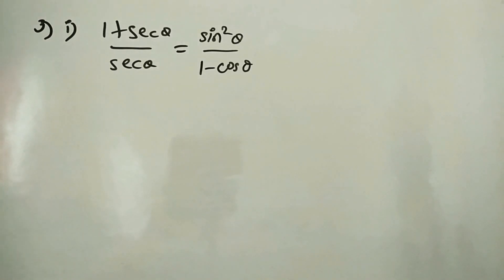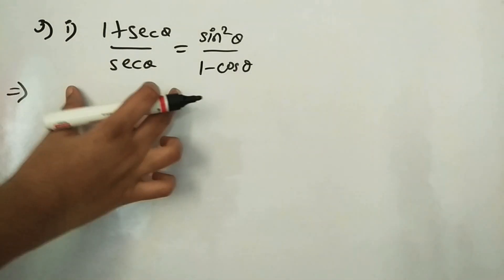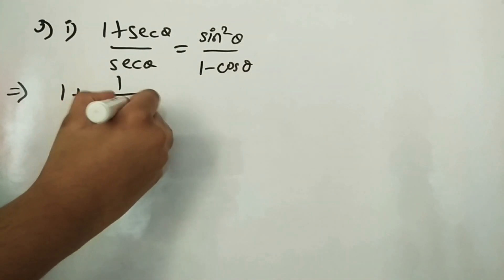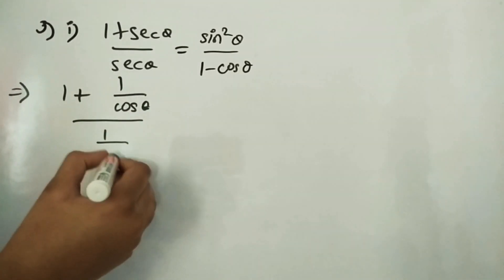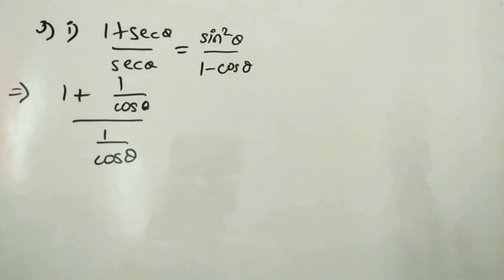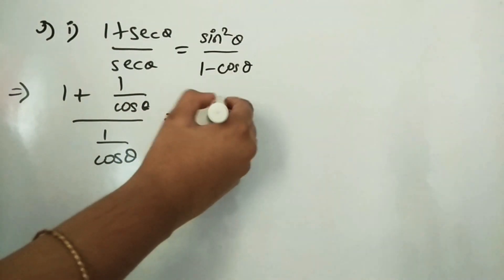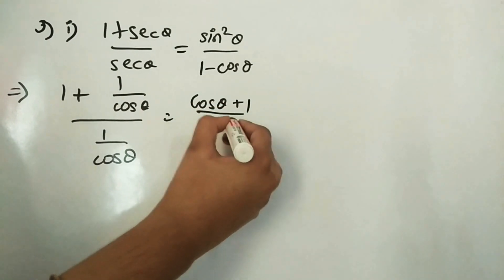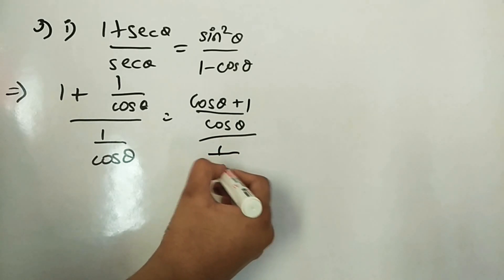We are solving only the LHS part. Secant can be written as 1/cos θ, so we get (1 + 1/cos θ) divided by (1/cos θ). Taking LCM in the numerator gives (cos θ + 1)/cos θ, divided by 1/cos θ.